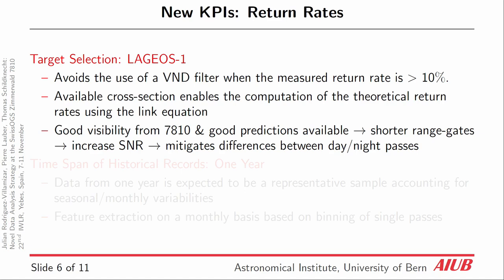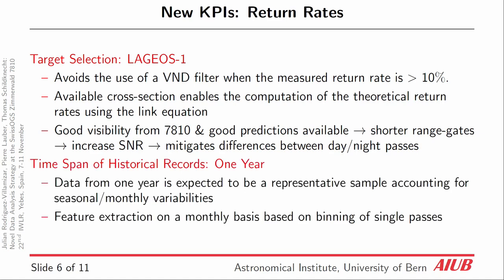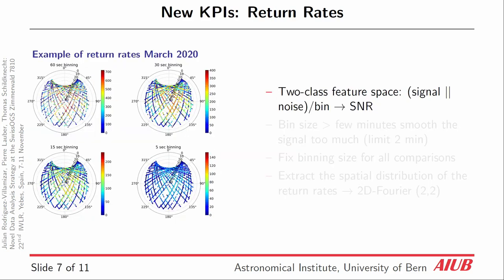Finally, from our station we have very good visibility and good predictions, so we can shorten the range gates and increase the signal-to-noise ratio. This allows us to avoid the distinction between day and night passes, which is important for the next comparison. We chose a time span of one year to account for seasonal variability, and we do feature extraction on a monthly basis. Here we see different passes and the return rates for passes during the month of March 2020, where we do not distinguish between signal and noise but just compute the return rates per pass.